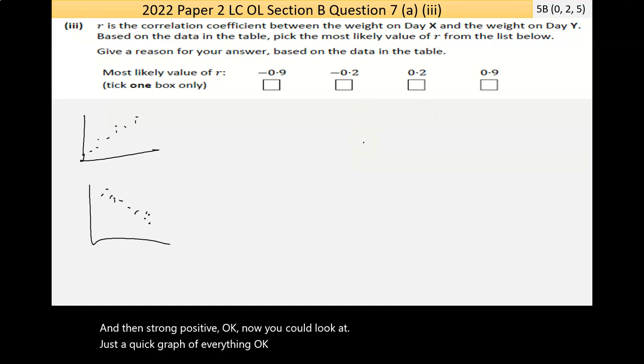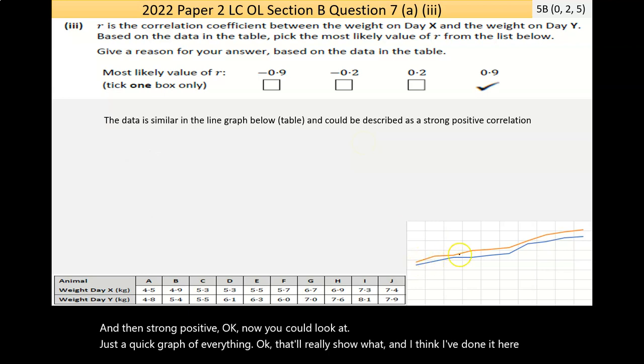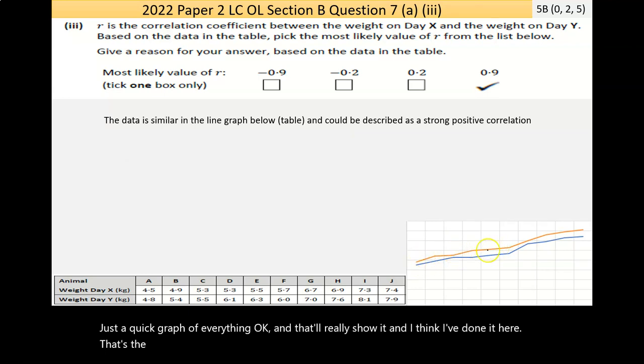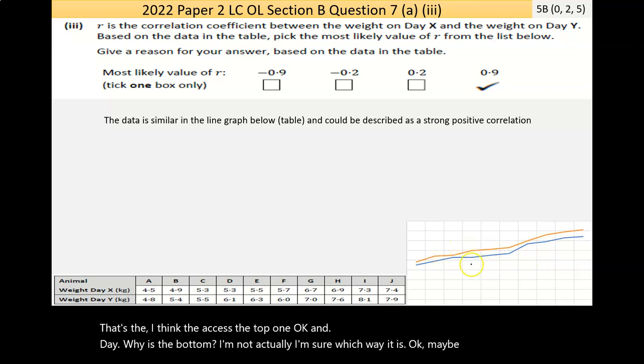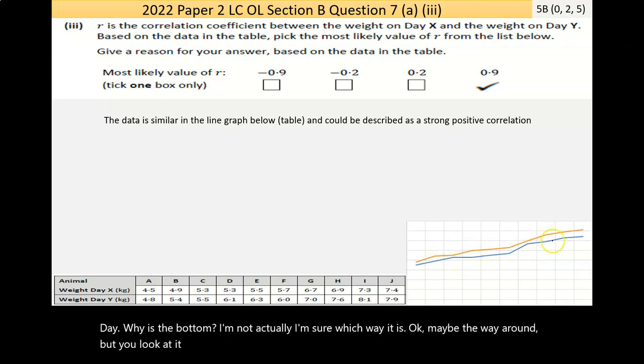If the data was going down like this, it would be a strong negative correlation. Now, this is strong negative, this is weak negative, weak positive, and then strong positive. Now, you could look at a quick graph of everything. That'll really show it, and I think I've done it here. I think day X is the top one, and day Y is the bottom one. I'm not actually sure which way it is. It might be the other way around. But either way you look at it, is that a strong positive correlation? It's going up, so it's positive.